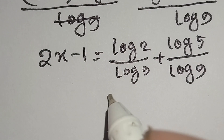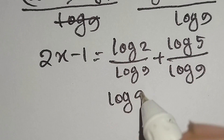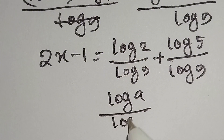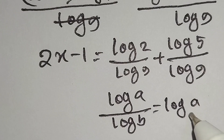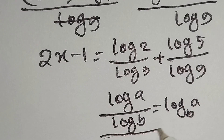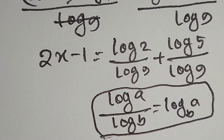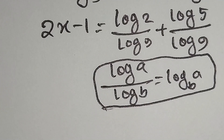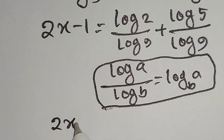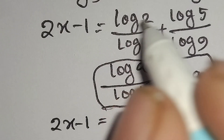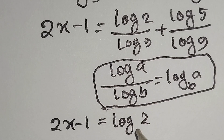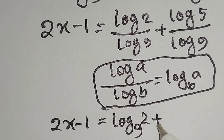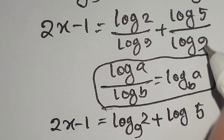We know log a over log b is equal to log a to the base b. According to this identity, we can write log 2 over log 9 as log 2 to the base 9, and log 5 over log 9 as log 5 to the base 9. So 2x minus 1 is equal to log 2 to the base 9 plus log 5 to the base 9.